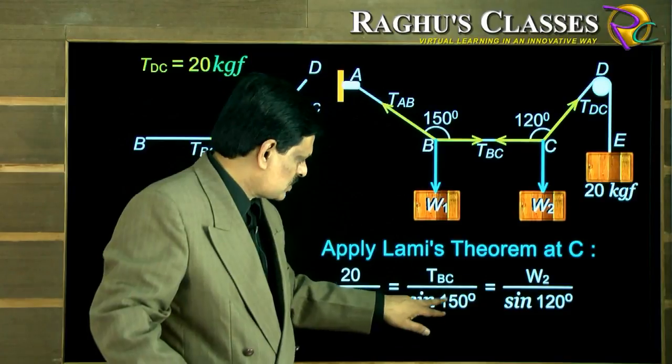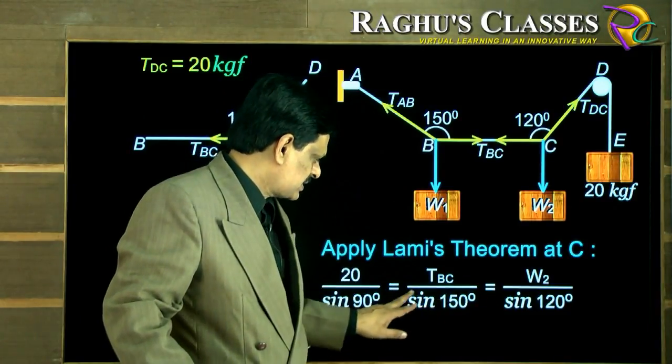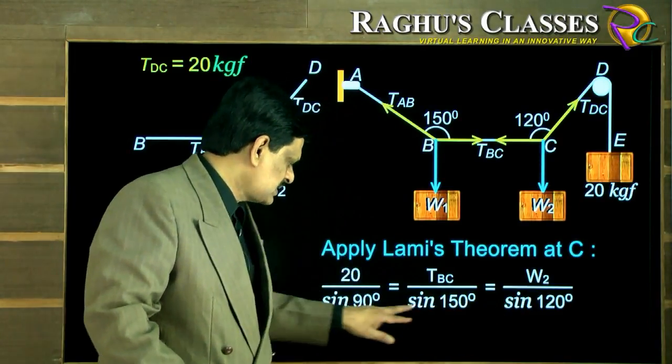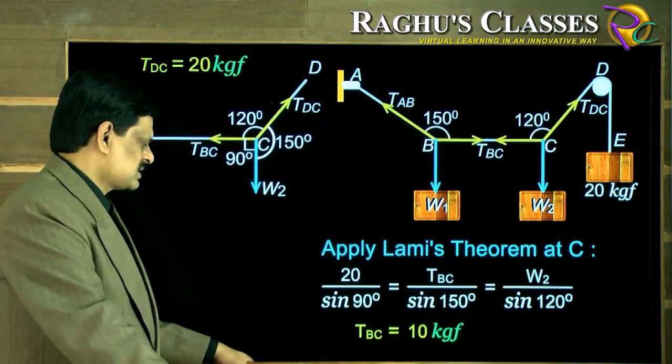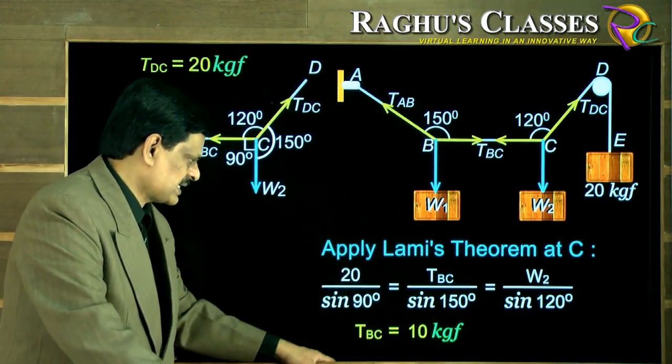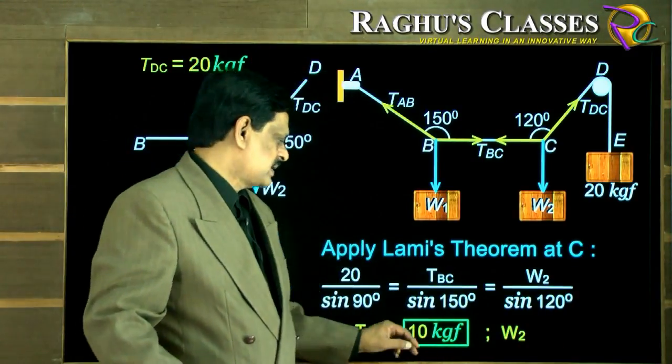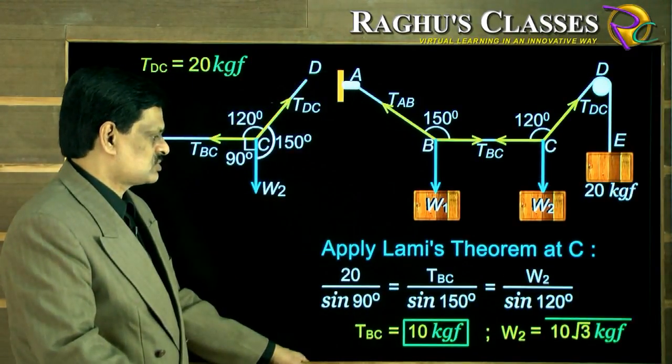Both are known, one known, only one unknown. So you equate these two to get BC, and equate this and this you will get the value of W2. So simplify, you get TBC is 10 kgf.